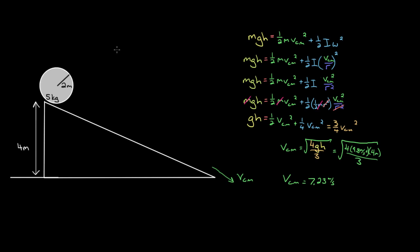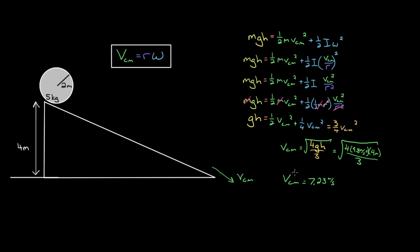To recap: even though the speed of the center of mass is not necessarily proportional to the angular velocity, if the object is rolling without slipping, the relationship v-cm = rω holds. This allows you to turn equations with two unknowns into equations with only one unknown, which lets you solve for the speed of the center of mass.